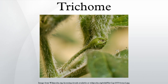Root hairs, the rhizoids of many vascular plants, are tubular outgrowths of trichoblasts, the hair-forming cells on the epidermis of a plant root. Root hairs are lateral extensions of a single cell and only rarely branched. Just prior to root hair development, there is a point of elevated phosphorylase activity. Root hairs vary between 5 and 17 micrometers in diameter and 80 to 1500 micrometers in length.